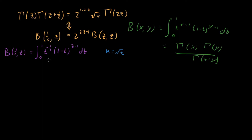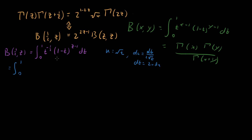With u equals root t, we get du equals one half over root t times dt, and since root t equals u, dt equals two u du. Substituting in, our bounds of integration don't change. The t to the minus one half becomes one over u, and then we also have the two u from dt — so the one over root t and the two u combine, leaving us with the integral from zero to one of two times one minus u squared raised to the z minus one.